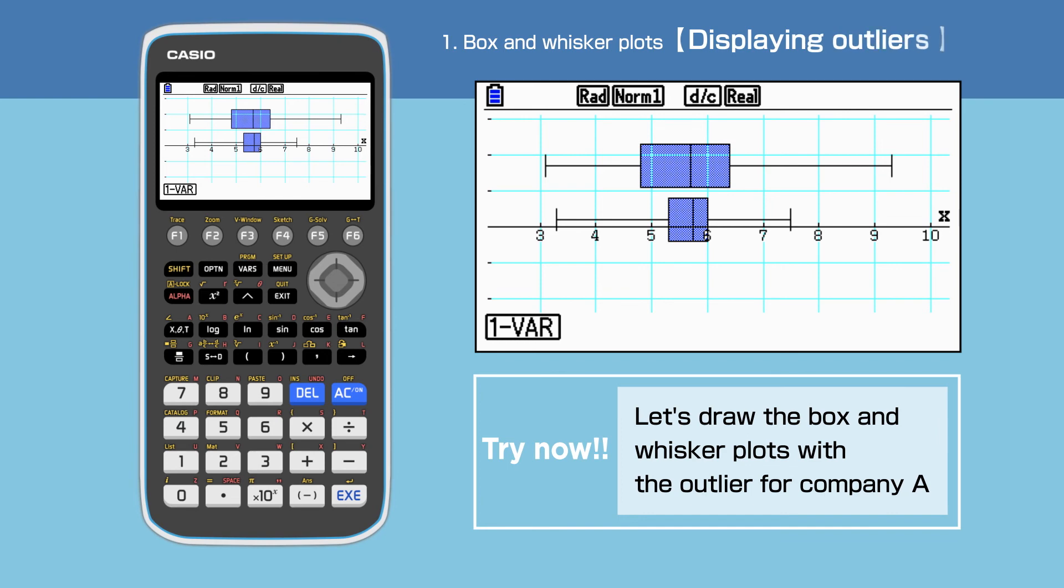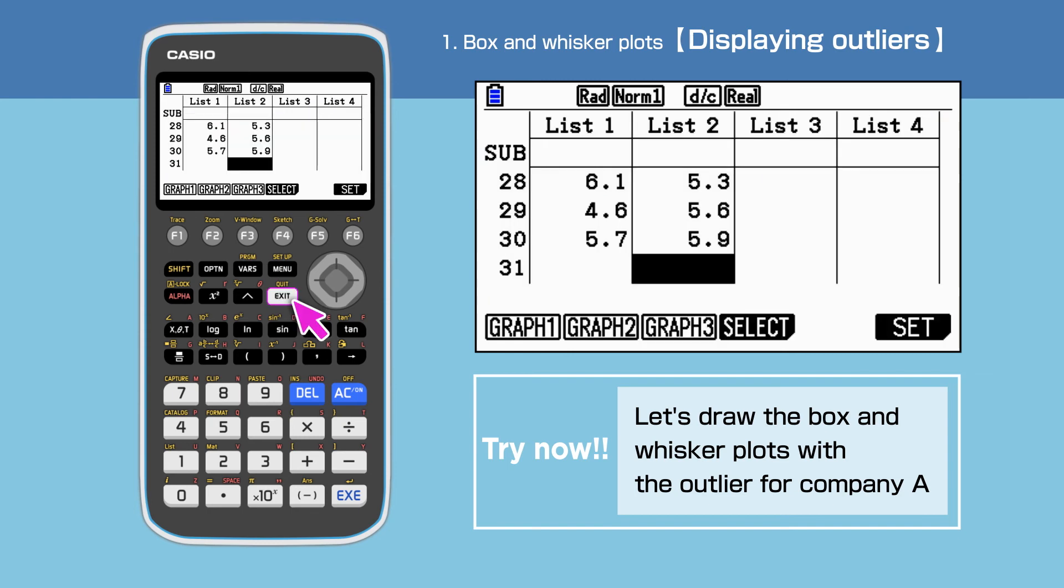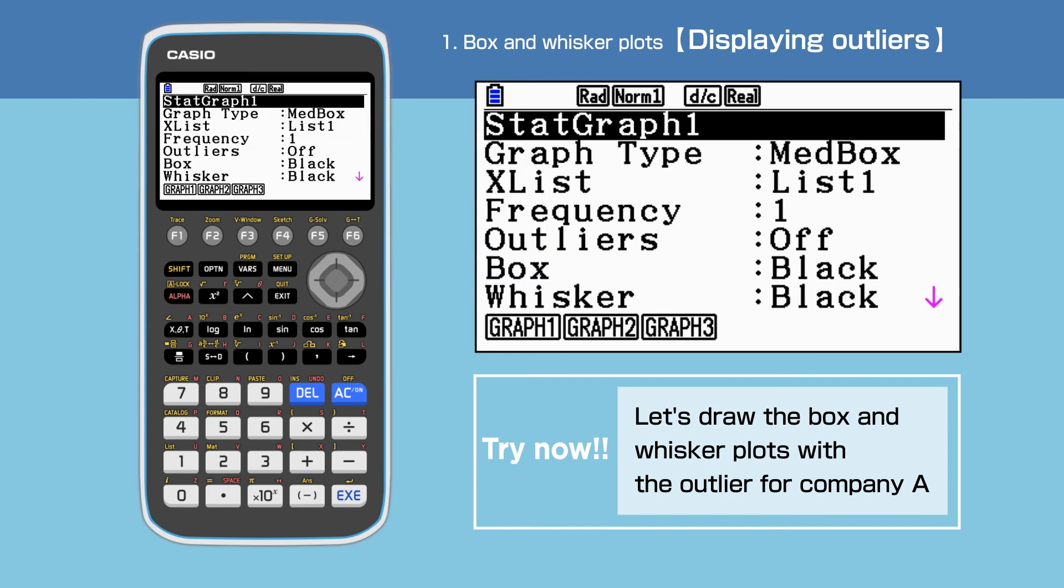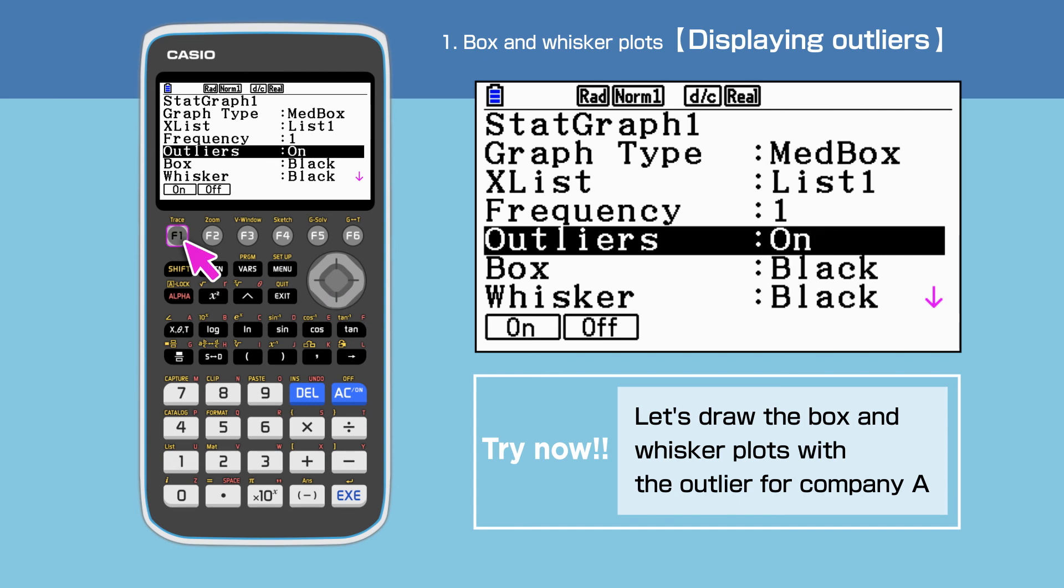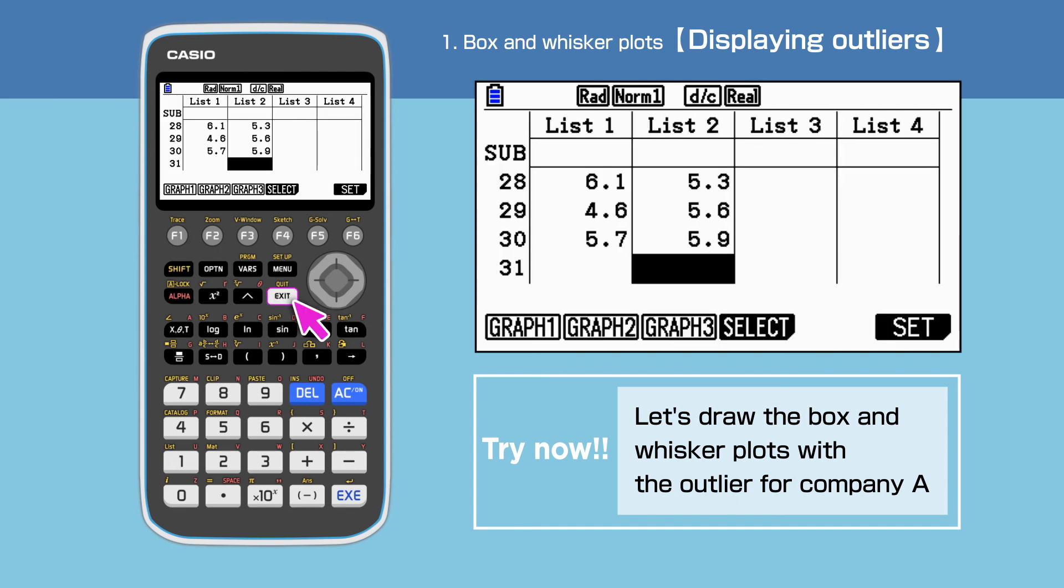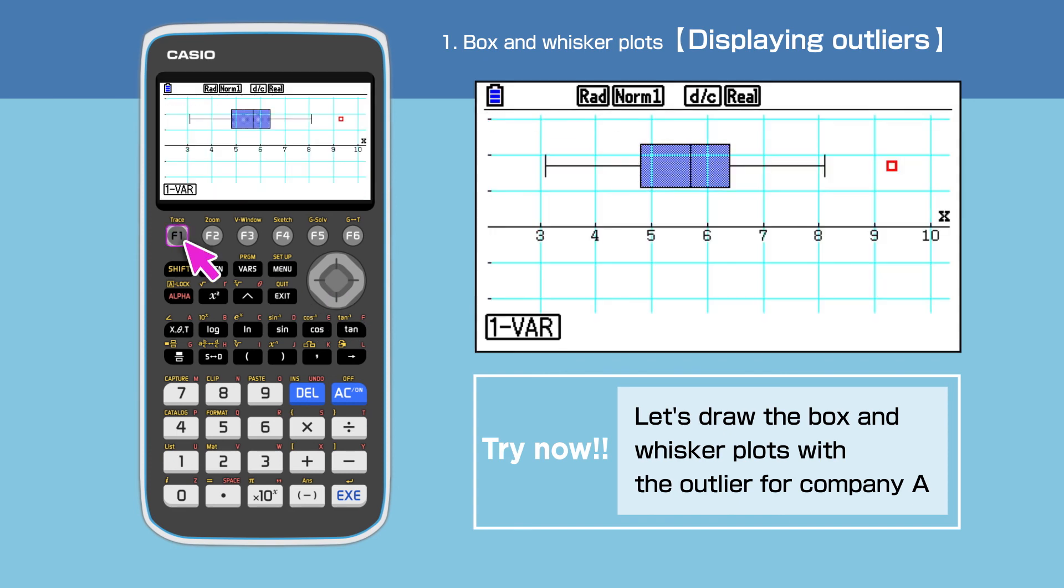This CG50 can also display outliers. In order to do this, go back to the data screen by pressing exit, then press F6 to display setup. Switch on the outliers under the stat graph 1. Exit to end setting, then press F1 to redraw the stat graph 1. We have an outlier for dataset A.